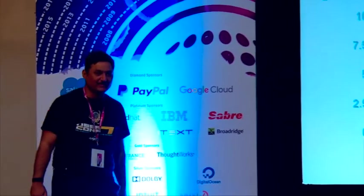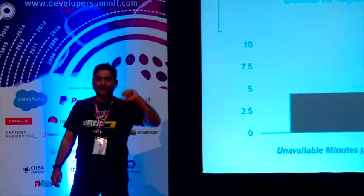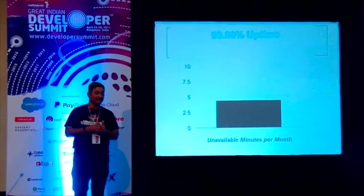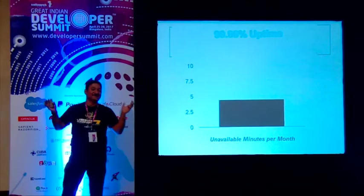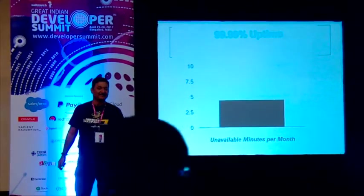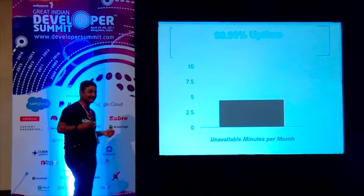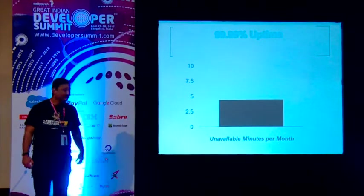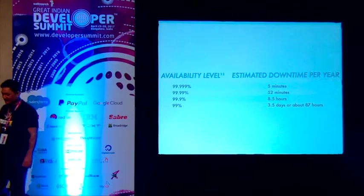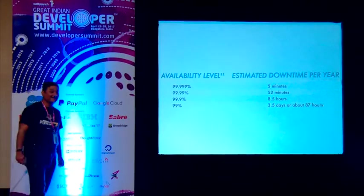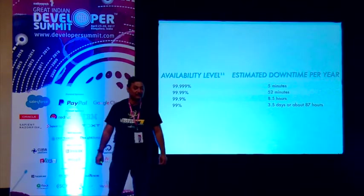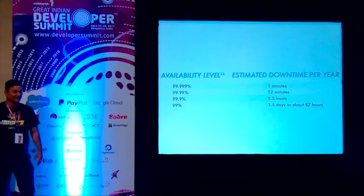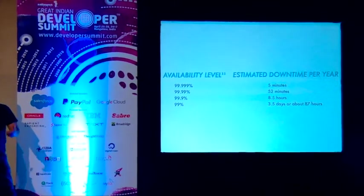If you go to any company, any product manager, the first thing they say is uptime. They want to make sure their service is available 99.9999% of the time — which is not really possible. If a product owner tells you they want 99.99 availability, that's a pretty tall order — about five minutes of downtime per year. No company has achieved 99.999. Industry standard is 99.99, which is the best you can aim for.